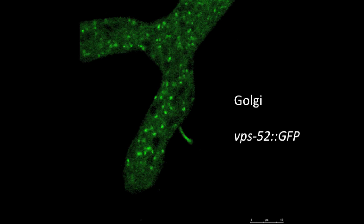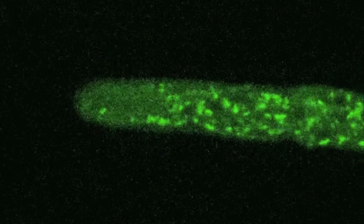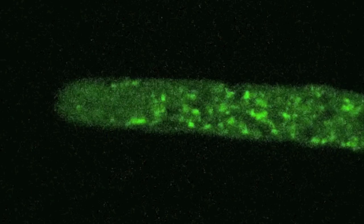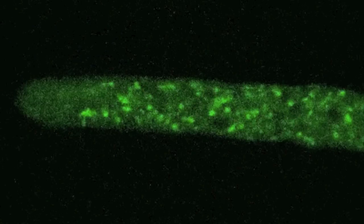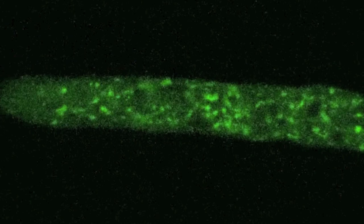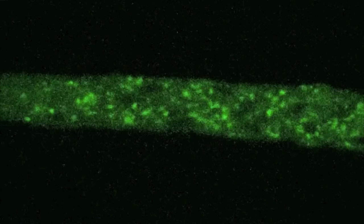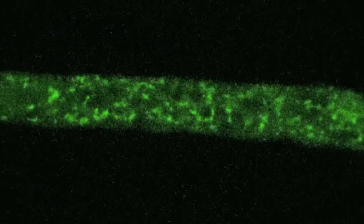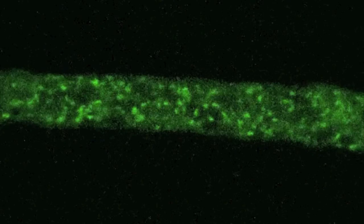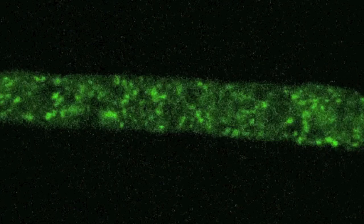In Golgi, proteins are modified and packaged. Golgi in Neurospora are small, rather irregular vesicles. They're most abundant near the hyphal tip. Interestingly, different Golgi proteins appear in different non-overlapping compartments, and the real structure of Golgi in filamentous fungi is poorly understood.